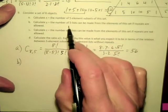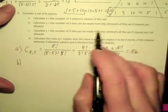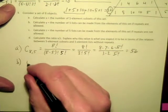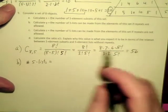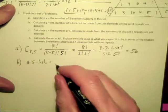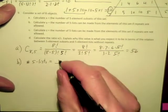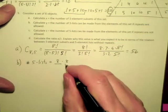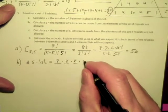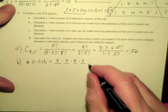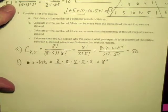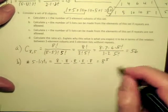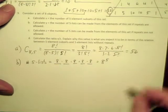How about the number of 5 lists when repeats are allowed? When repeats are allowed, I'm going to have 8 choices at each step of the way as I build this 5 list: 1, 2, 3, 4, 5, and I'm going to get 8 to the 5th. That's the number of 5 lists.